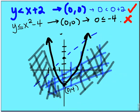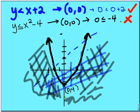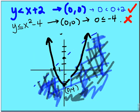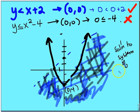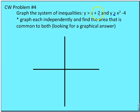With both regions shaded, we find the area common to both — the overlapping region. That overlapping area, highlighted in both blue and gray, represents the graphical solution to the system of inequalities. Your last classwork problem is to graph a system of inequalities with the direction of the inequality signs changed for both. That's it for this edition of Aughton Math. Come back next time when we talk about more graphing of polynomials.